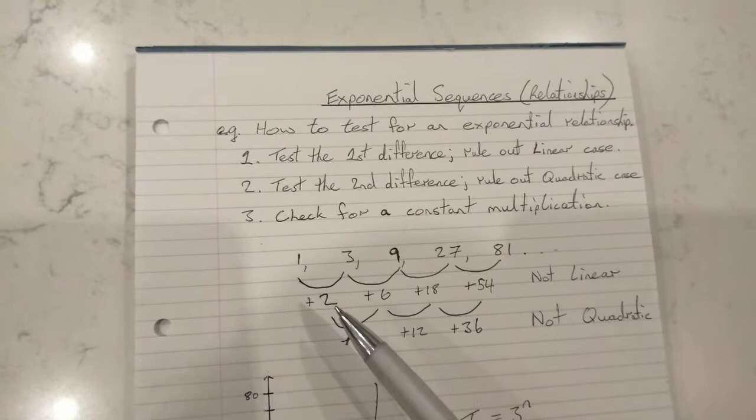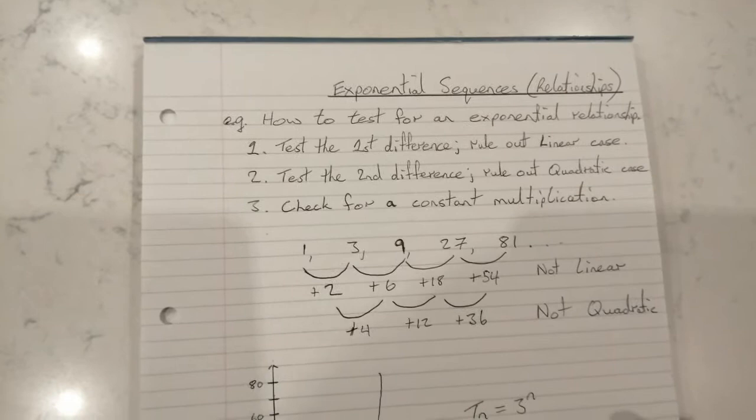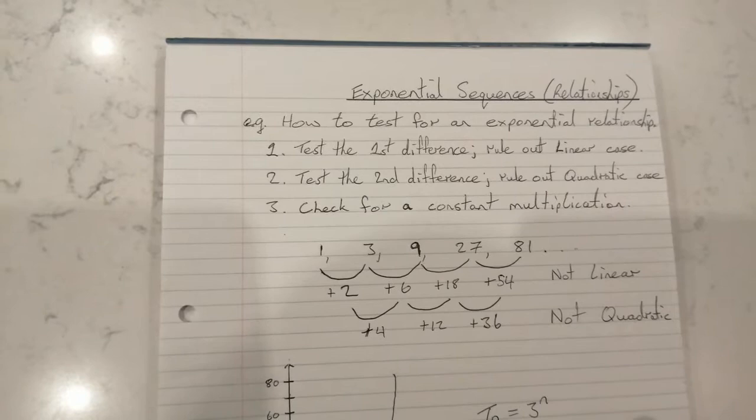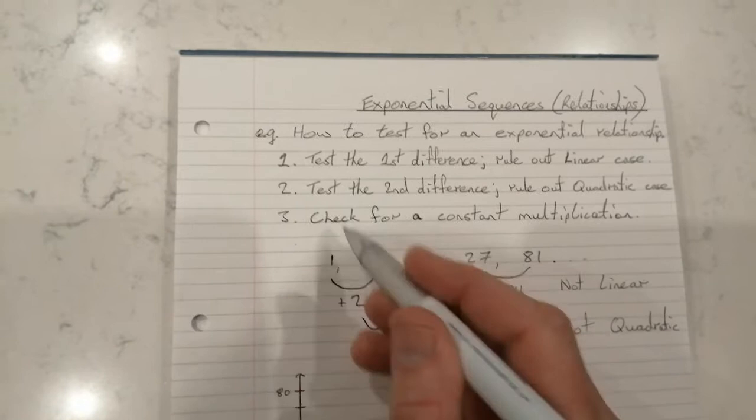And then what I've said for the third step is that we'll check for a constant multiplication after that. So it is possible that this is not linear, not quadratic, nor is it exponential. I mean, sometimes you'll check these two and you'll come to the conclusion afterwards that it's none of our recognized three types of sequences for the junior cert.